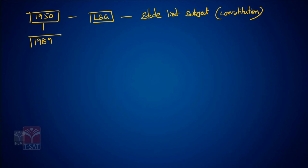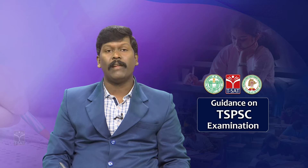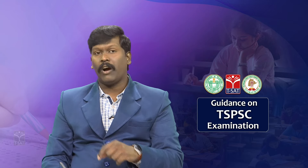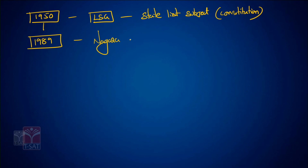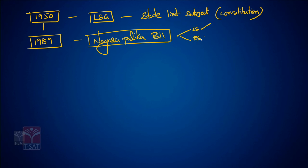In 1989, under the recommendations of the LM Singhvi Committee, the 65th Constitution Amendment Bill called the Nagarapalika Bill was initiated in parliament, passed in Lok Sabha, but rejected in Rajya Sabha.